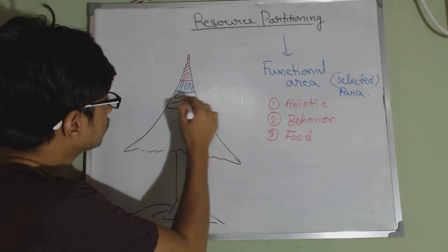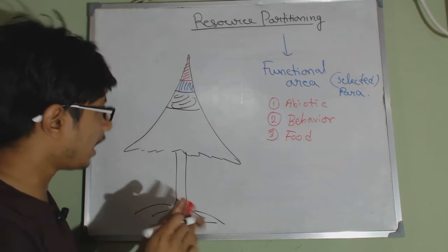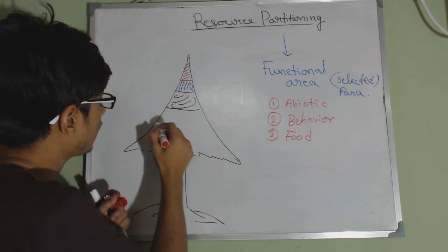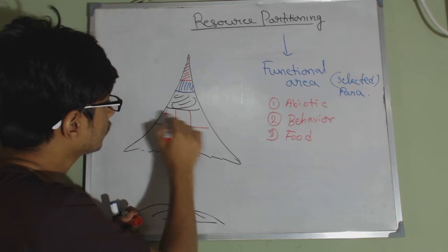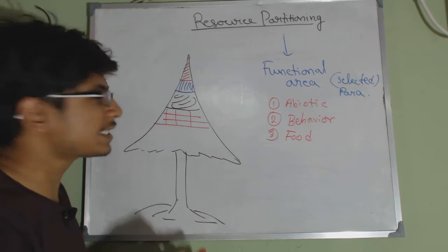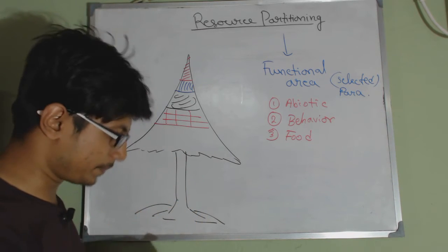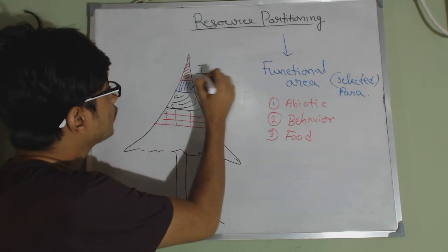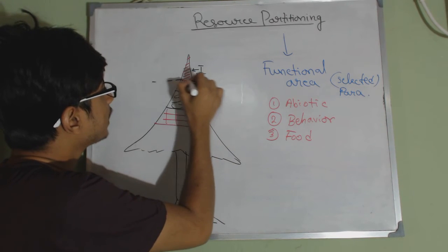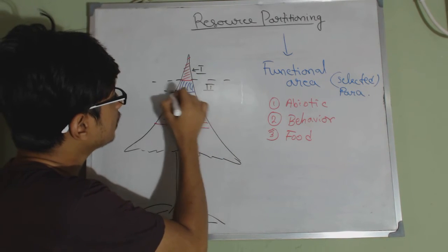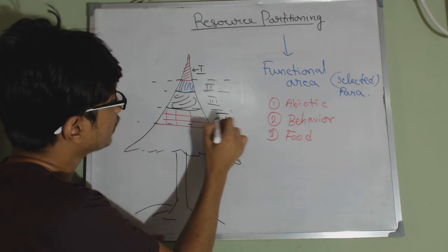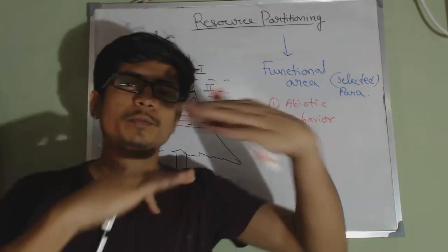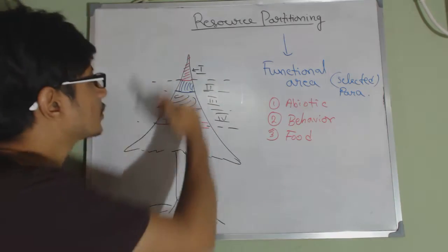Let's say in this case we are talking about four different species. You find species one lives only up to this area, species two lives here, species three lives here, and species four lives here. So they actually try to partition their resource, their habitat, to minimize the competition.